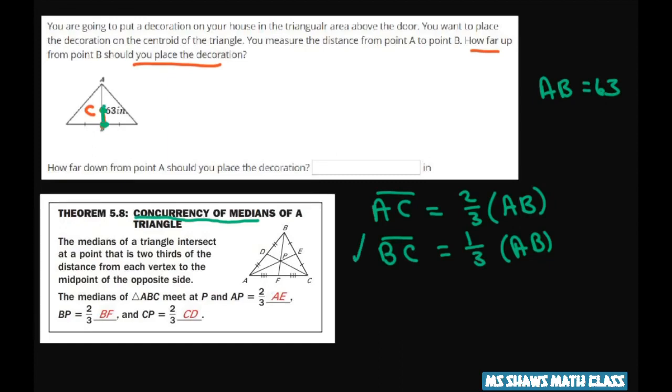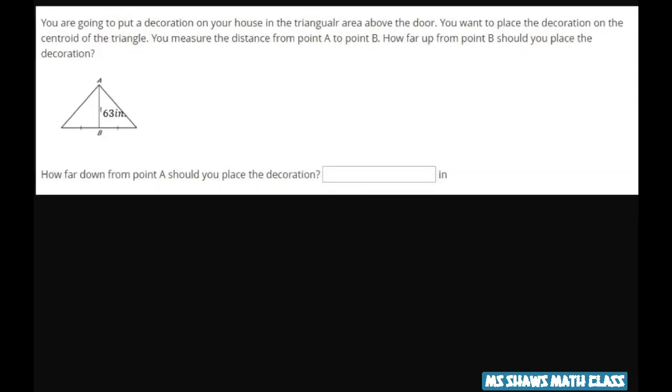So how far up is going to be BC, which is one-third of 63. So you divide 63 by 3, you get 21. So that's how far up.